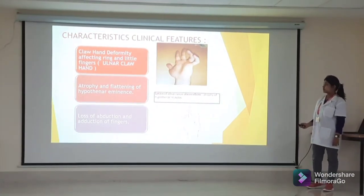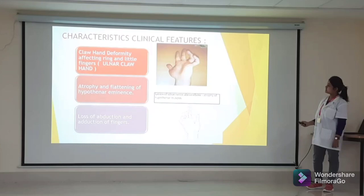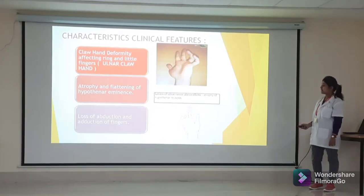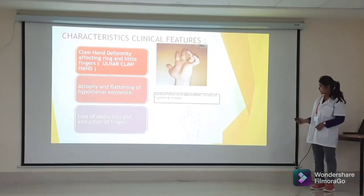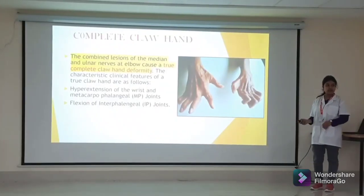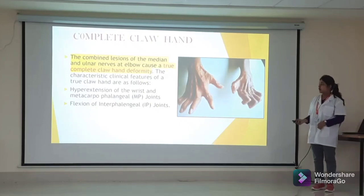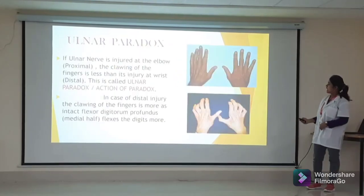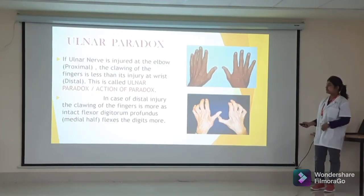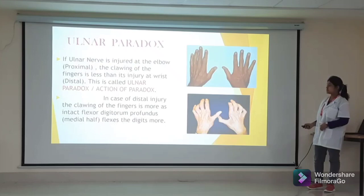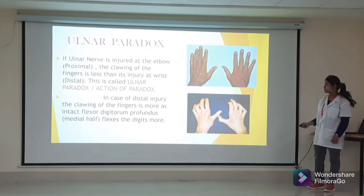Characteristic clinical features include claw hand deformity affecting the ring and little fingers, known as ulnar claw hand; atrophy of the hypothenar eminence; loss of abduction and adduction of fingers. Combined injury of the median and ulnar nerves at the elbow causes a true complete claw hand deformity. The ulnar paradox states that if the ulnar nerve is injured at the elbow, the clawing is less than in injury at the wrist, because in distal injury the flexor digitorum profundus fixes the digits more.